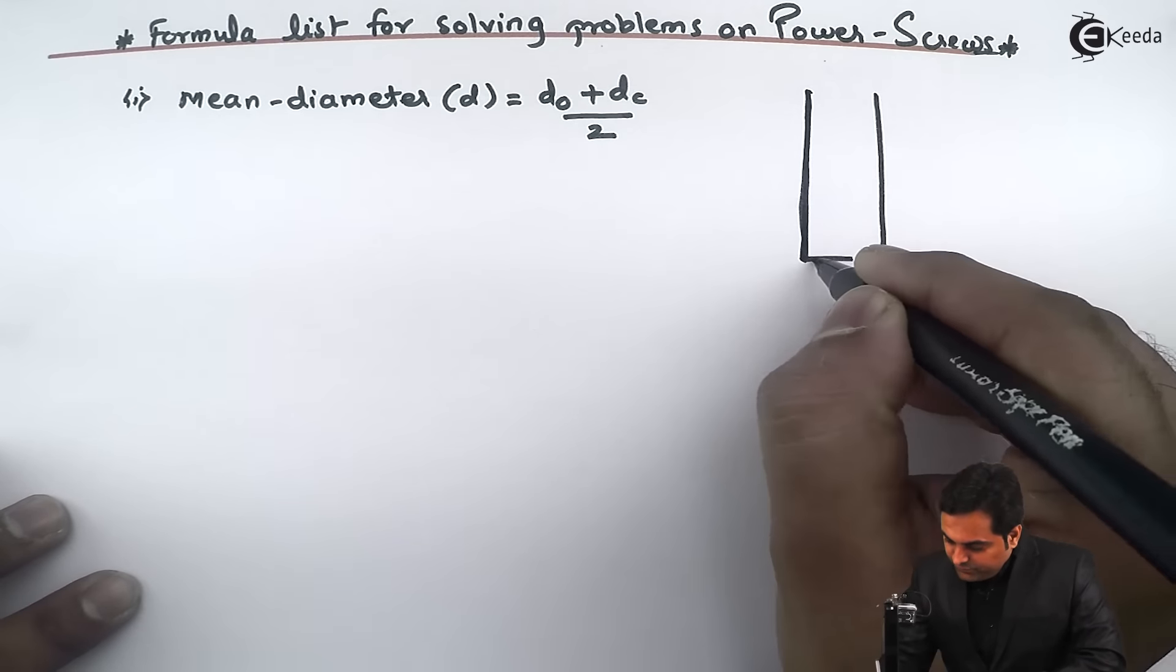Or it is also equal to Dc plus pitch by 2. So this is the first formula.